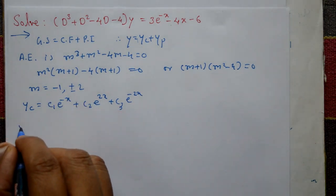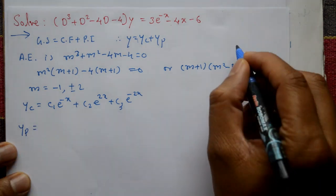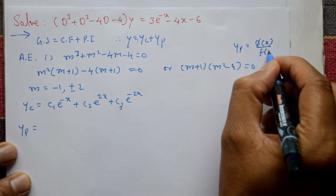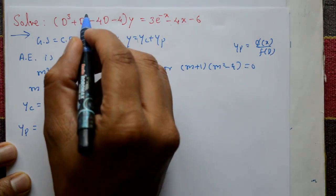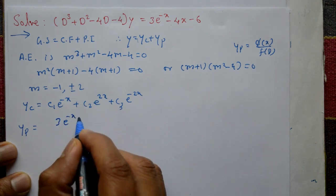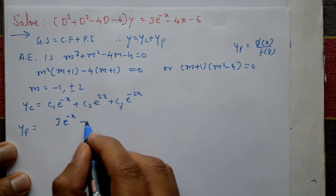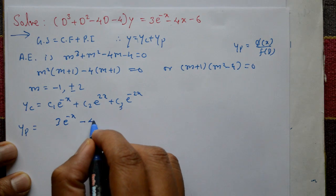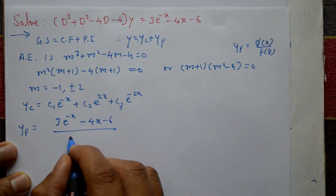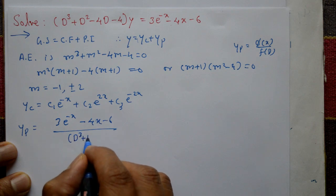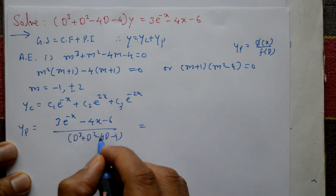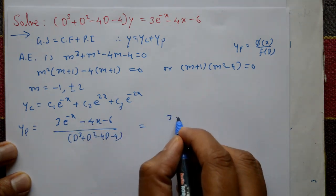Now go to the particular integral. The particular integral is φ(x) / f(D), where φ(x) is the right-hand side and f(D) = D³ + D² - 4D - 4. Separate the terms: one is 3e^(-x) divided by f(D), and the other is -(4x + 6) divided by f(D).